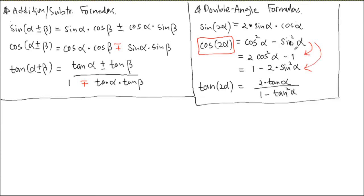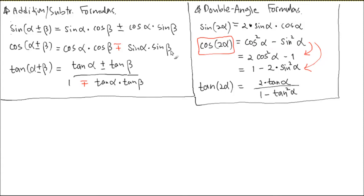Here's the double angle formula. If you look at the sine formula and replace beta with alpha, you get the exact same copy — sine alpha and cosine, two copies. And if you look at the addition formula of cosine, you have cosine alpha and cosine alpha. That's why you have cosine squared alpha. Sine alpha and sine alpha, so you get sine squared alpha.